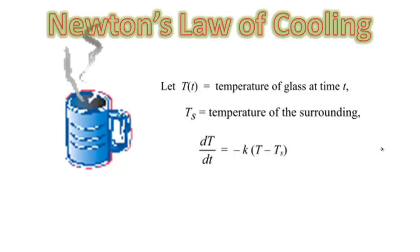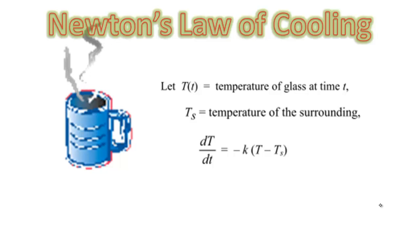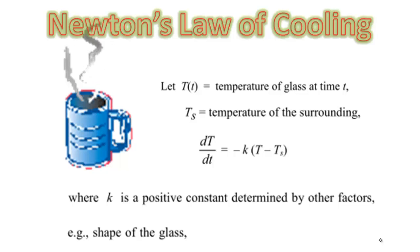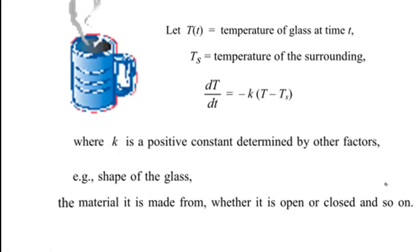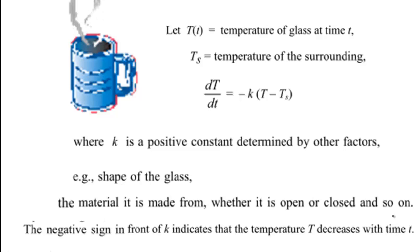That means the rate of change of temperature of the glass is equal to minus K times the temperature difference T minus Ts, where K is a positive constant determined by other factors such as the shape of the glass or the material it is made of, whether the glass is open or closed, and so on. The negative sign in front of K indicates that the temperature T is decreasing with time t.